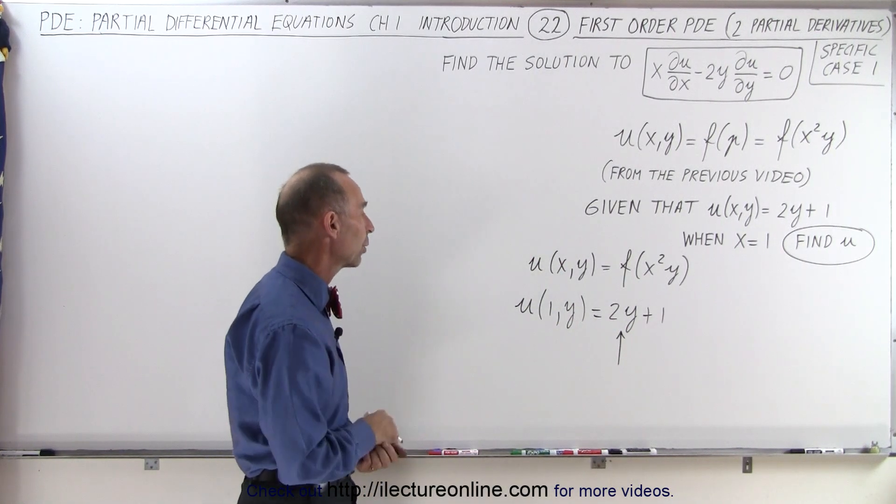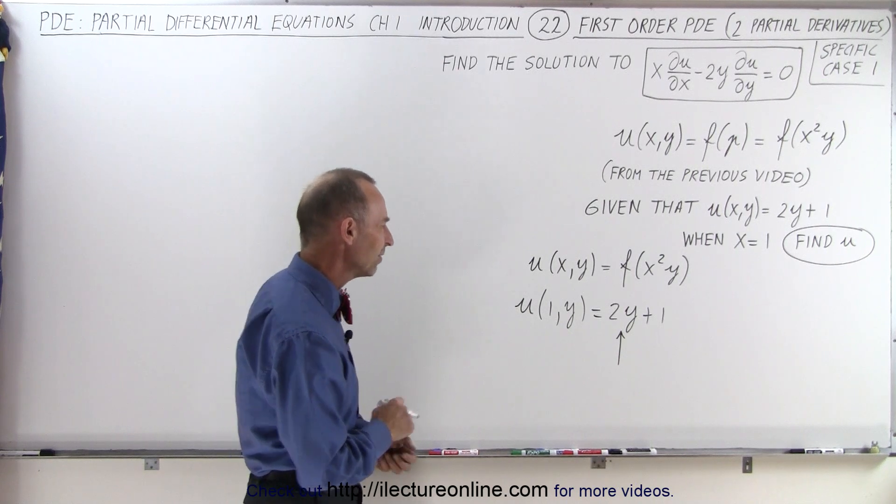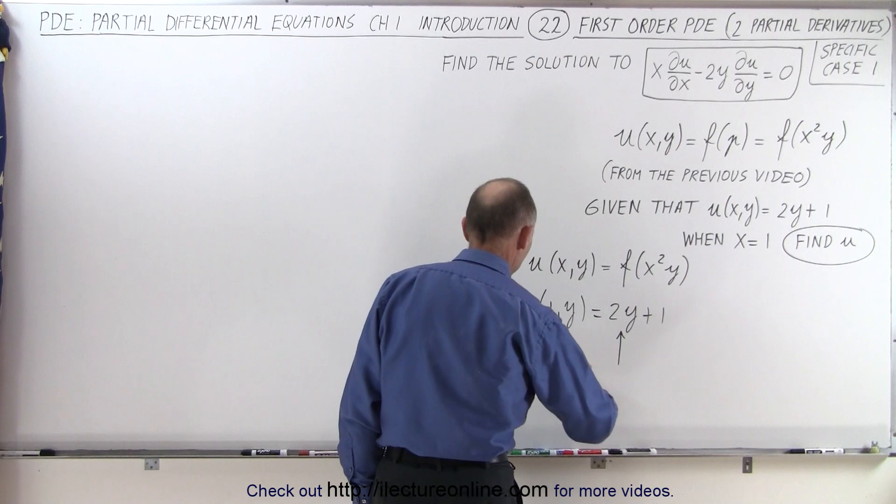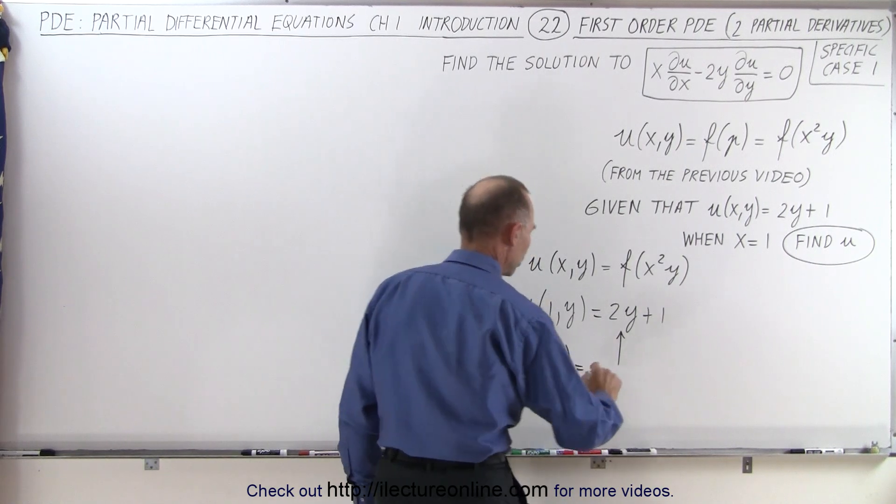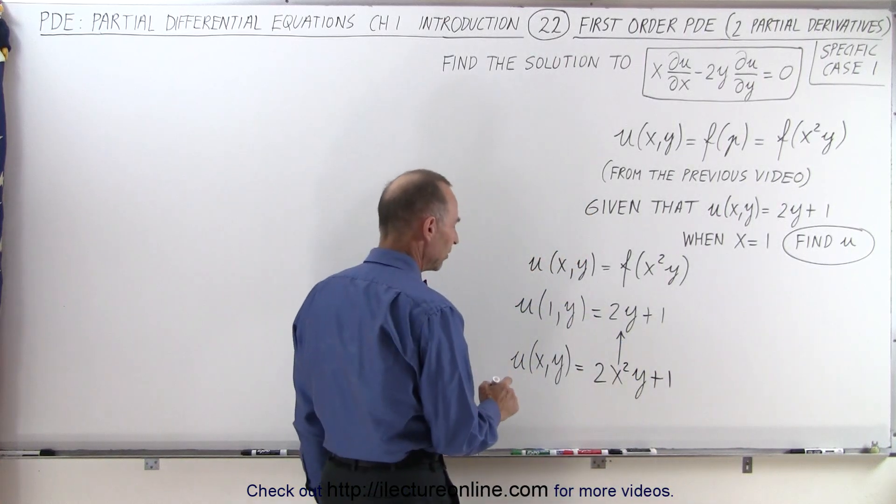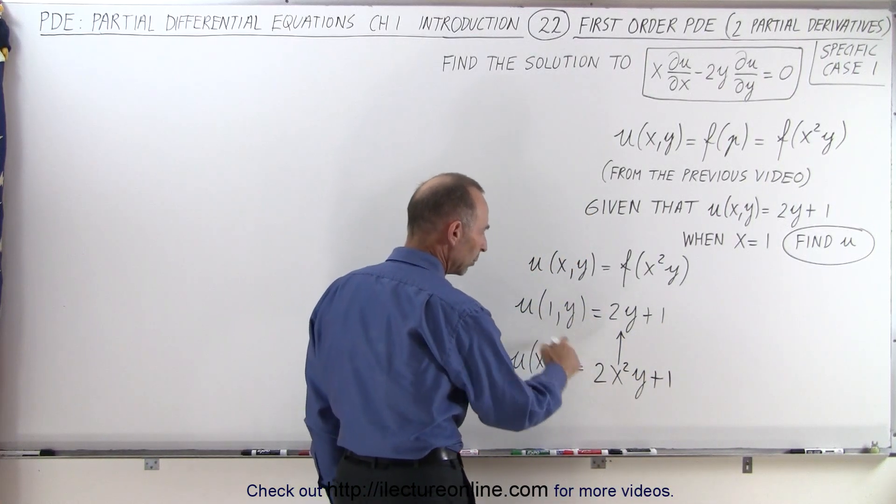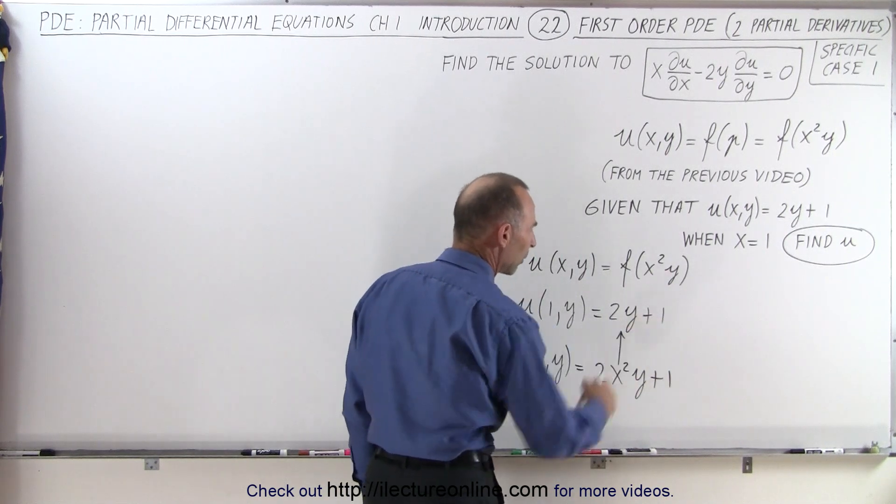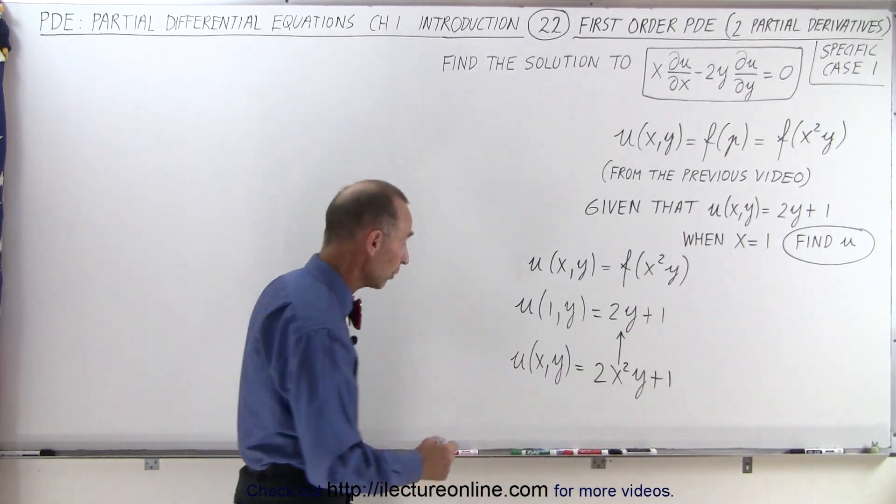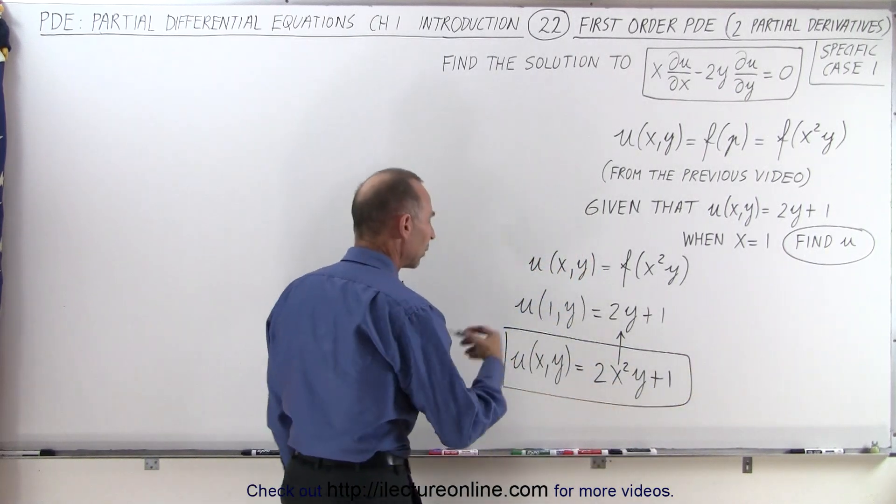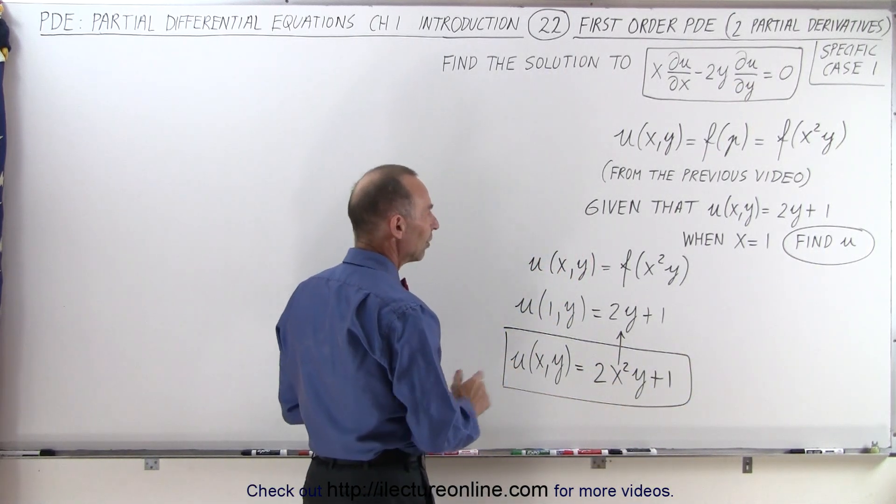...that would be a function of x squared y, which means that we can say that therefore u of xy, a possible solution would be 2 times x squared y plus 1. This means that if we replace x by 1, we put a 1 in here, we get 2 times 1 times y, we get back what we started with here. So therefore, this is indeed a valid solution that we're looking for in this case.